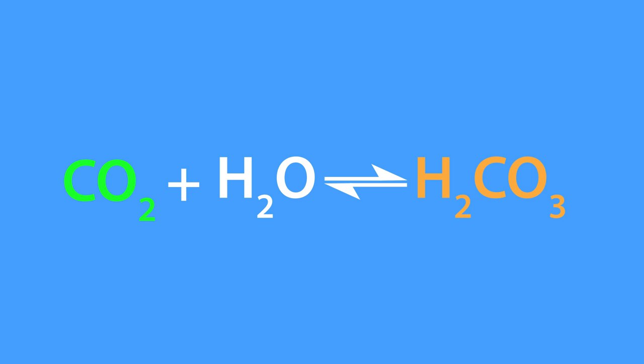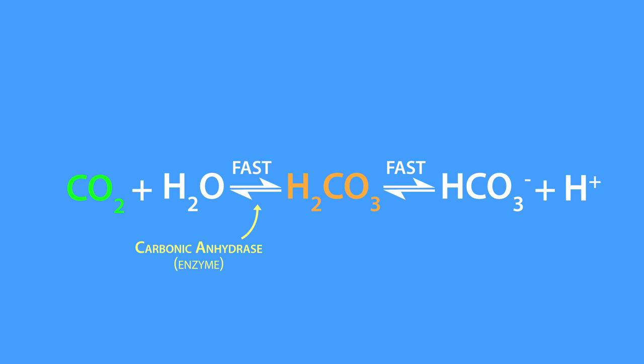Carbonic acid is produced when carbon dioxide is dissolved in water, or in our case, blood. Normally this reaction is slow, which is why it requires the enzyme carbonic anhydrase. Once carbonic acid is formed, it spontaneously dissociates into bicarbonate and hydrogen ions. For a number of reasons, it's more convenient to measure the partial pressure of carbon dioxide than the concentration of carbonic acid.